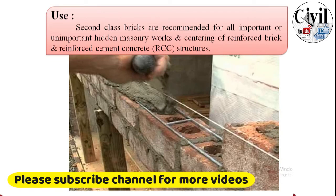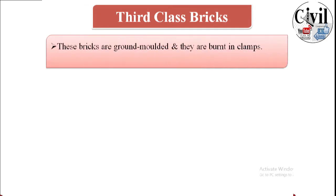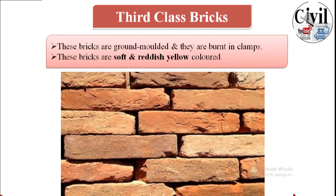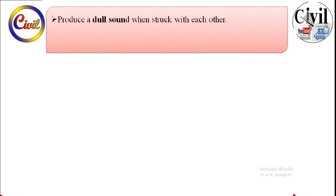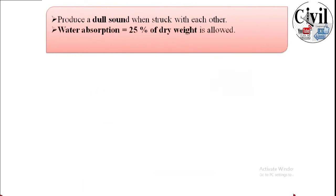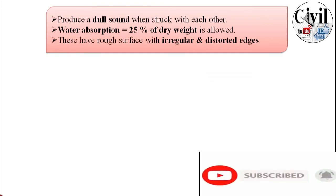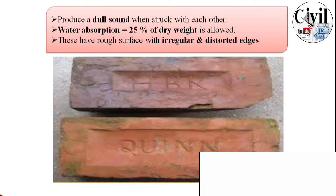Third class bricks are ground-molded and burned in clamps. They are soft and reddish-yellow in color, indicating poor quality. They produce dull sounds when struck together, meaning they are not sound or dense enough. Water absorption is quite high — 25 percent of dry weight is allowed. They have irregular surfaces and distorted edges.